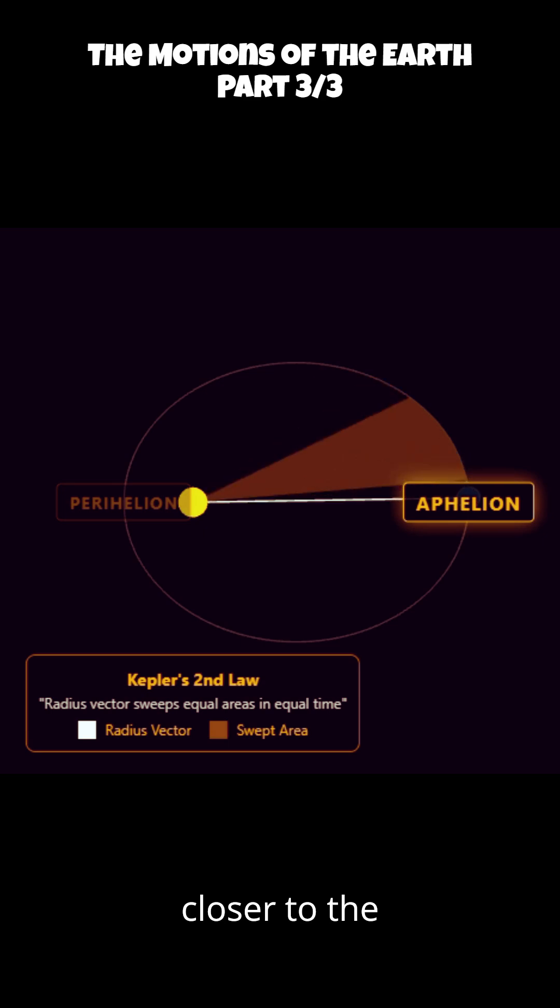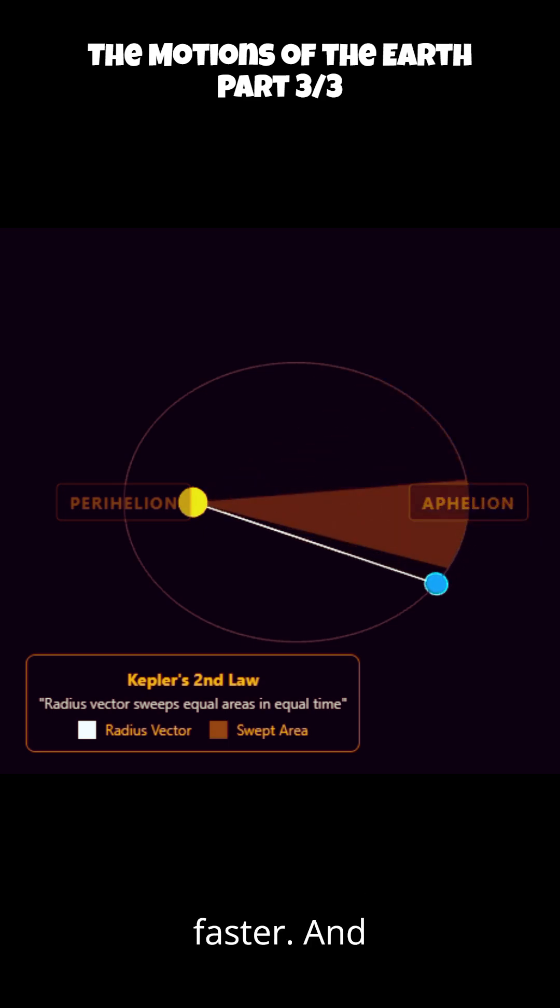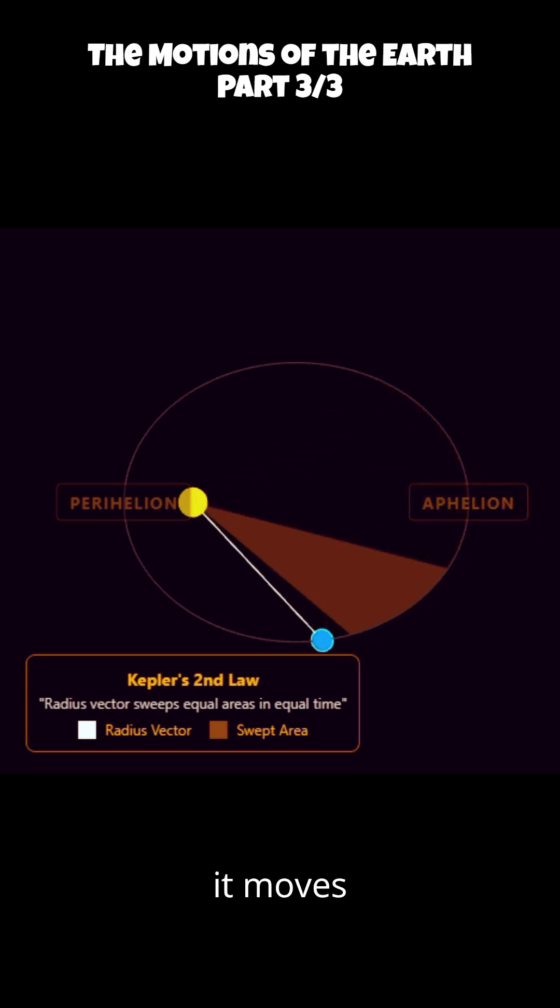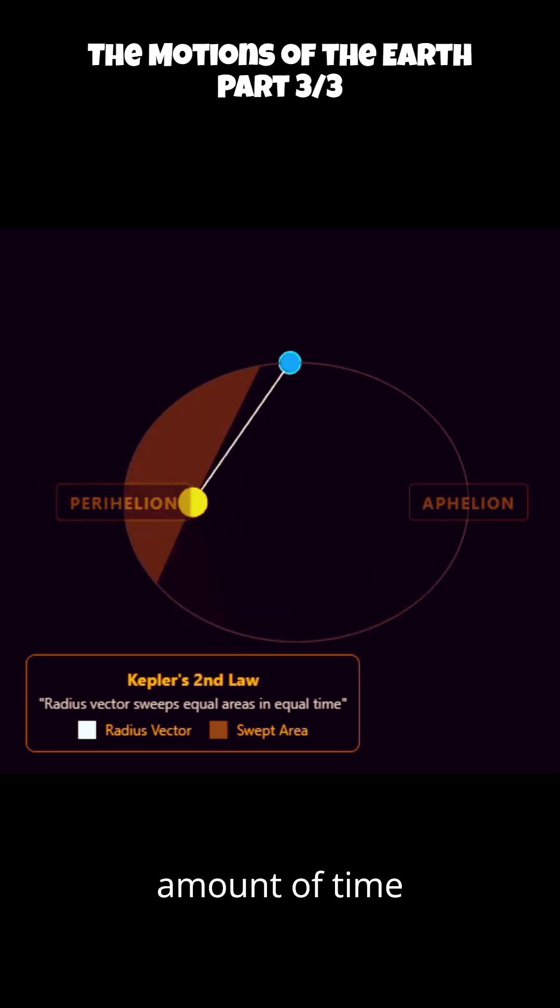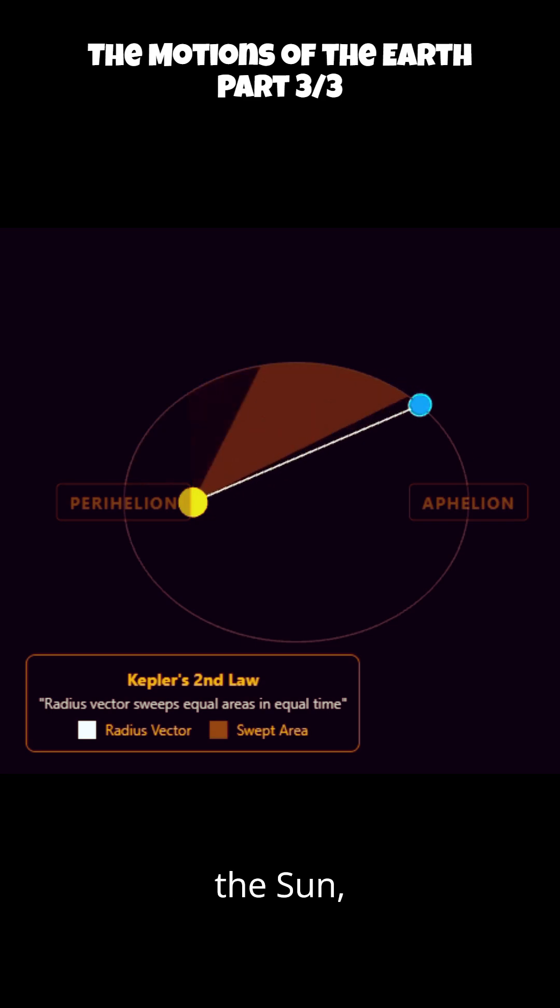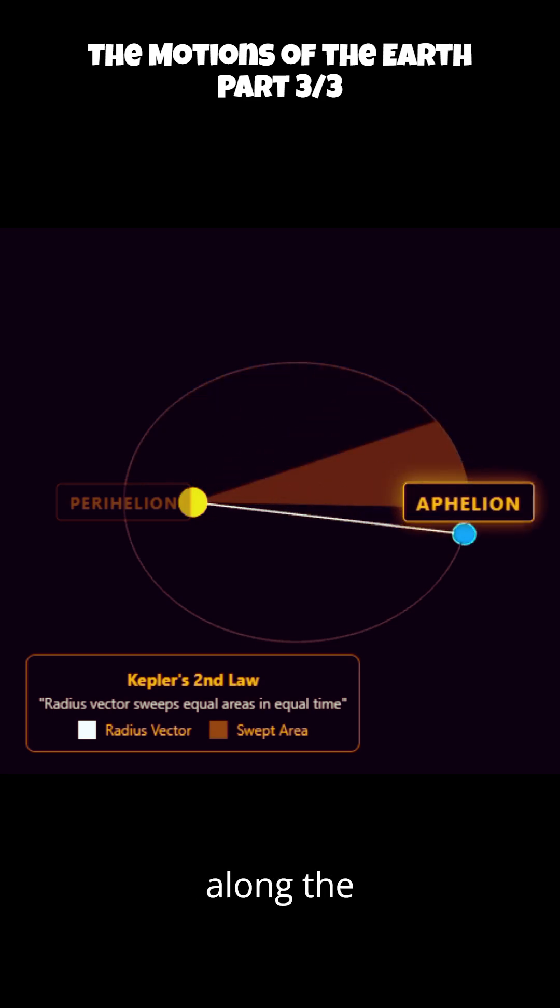When Earth is closer to the sun, it moves faster, and when it's farther away, it moves slower. So Earth covers more distance in the same amount of time when it's near the sun, making its speed change as it moves along the elliptical orbit.